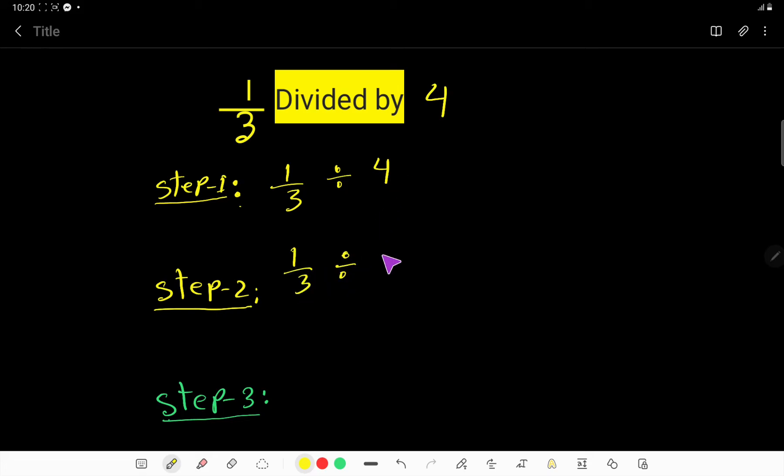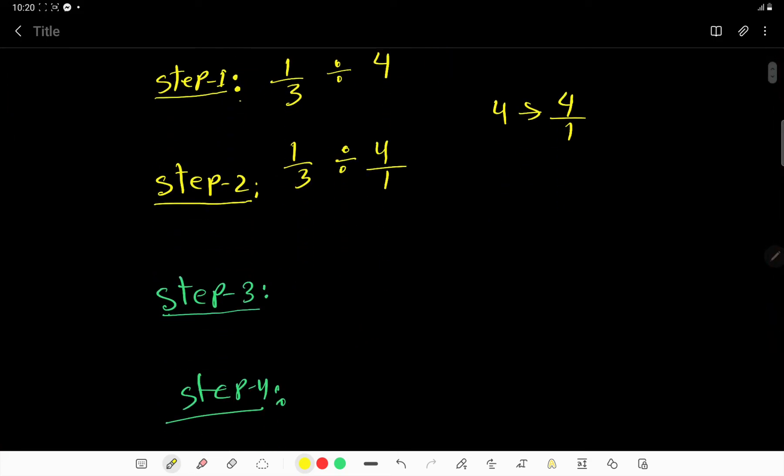We'll write this whole number as a fraction. You can express any whole number as a fraction by taking one as the denominator. The value of four and four over one is the same.